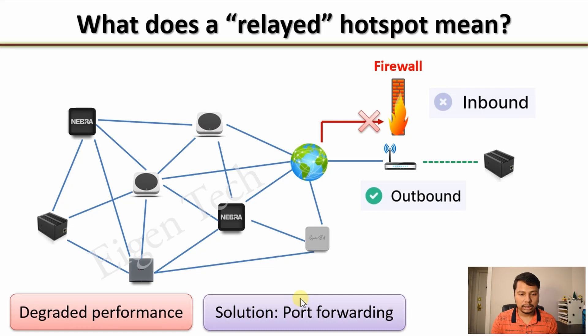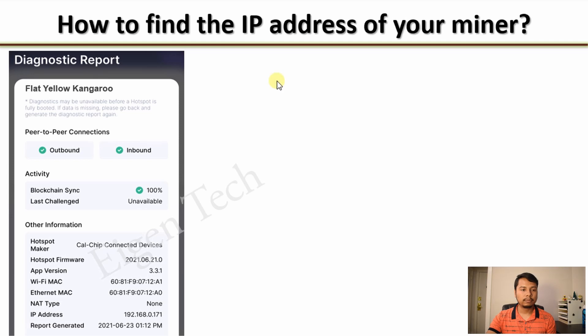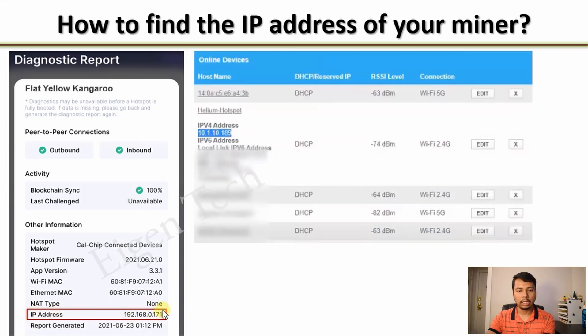To perform port forwarding, you first need to know the IP address of your Helium miner. The easiest solution is to perform the diagnostic report, and in the report you will see an entry which says IP address — this is the address to which you have to perform the port forwarding. If you don't use the diagnostic report, you can directly go to your router settings and find the Helium Hotspot there.